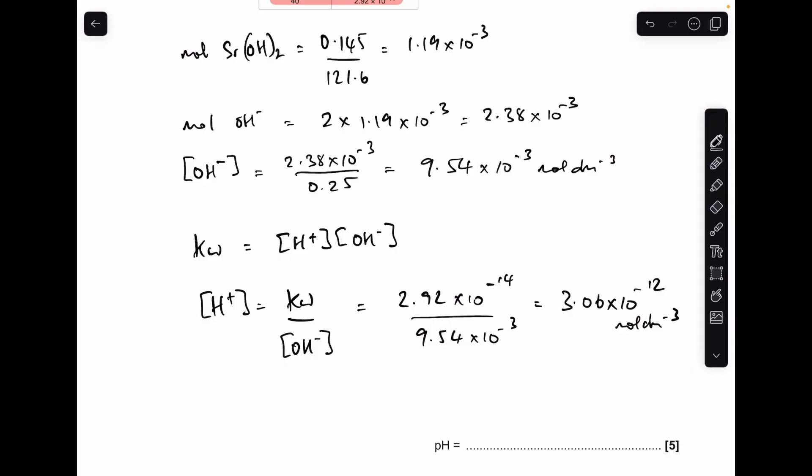All we've got to do now is minus log that and give our answer to two decimal places, which gives a pH of 11.51. Very well done if you've got that one right.